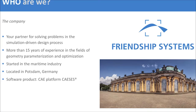Let me start with a short introduction about Friendship Systems. Our goal is to partner with our customers to solve any problems they encounter in their simulation-driven design process. We have more than 15 years of experience, especially in the fields of geometry parametrization — specifically parametrization of complex and free-form geometries — and their optimization. We originally started in the maritime industry, and more recently transitioned into other applications like turbomachinery and powertrain. The company is located in Potsdam, and we have one main software product: the CAE platform CASES.